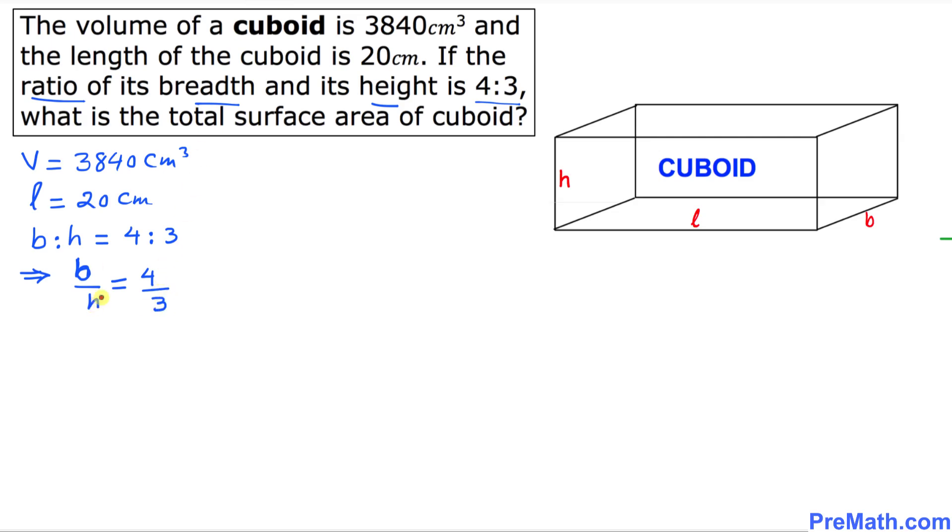What if I multiply both sides by h? We can see that h and h cancels out, so we end up getting b equals 4h divided by 3.